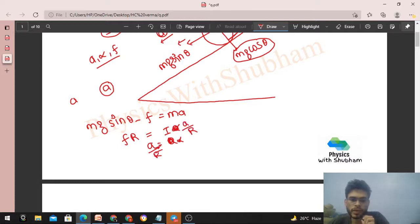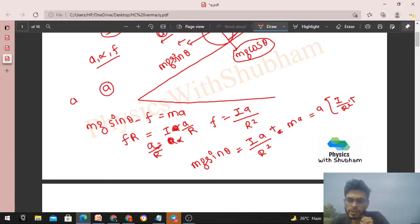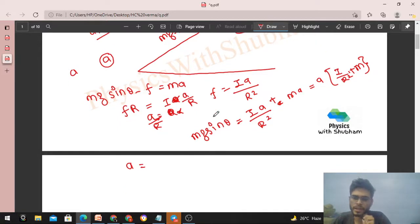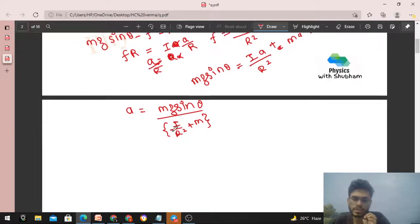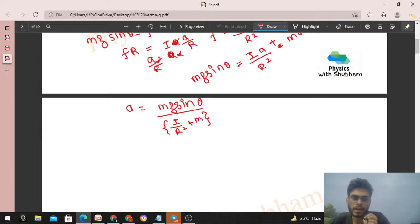Now eliminate friction. Friction from here: I into a upon r. Taking r below, we get r square. So mg sin theta minus I upon r square times a equals m into a. Taking this to that side, it becomes plus. Now, taking acceleration common: a times (I upon r square plus m) equals mg sin theta. So the linear acceleration is mg sin theta divided by (I upon r square plus m). This result we directly use. It's better if you remember this as a result.